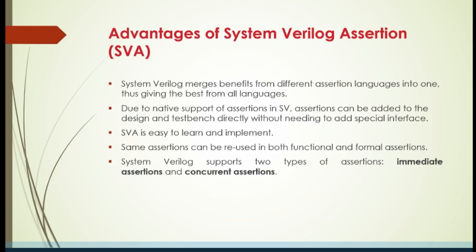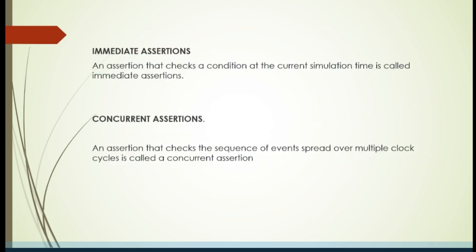Basically in SystemVerilog there are two kinds of assertions. One is immediate assertion and another is concurrent assertion. We will be seeing what immediate assertions are, what concurrent assertions are, and how we are going to write assertions in each type.